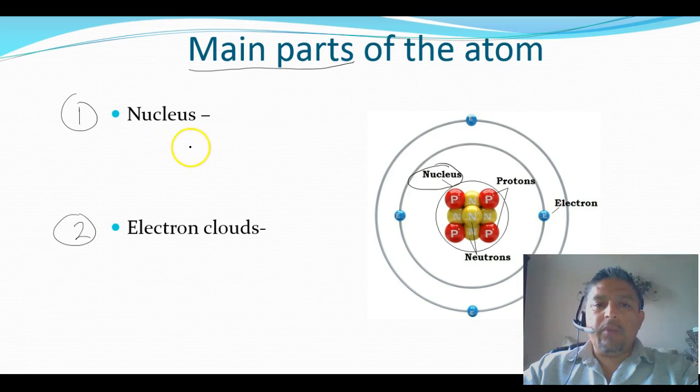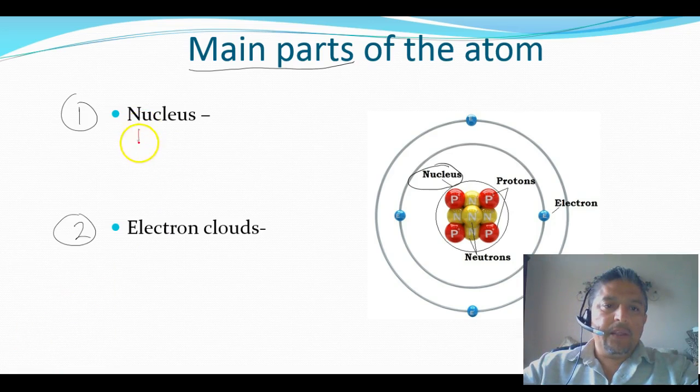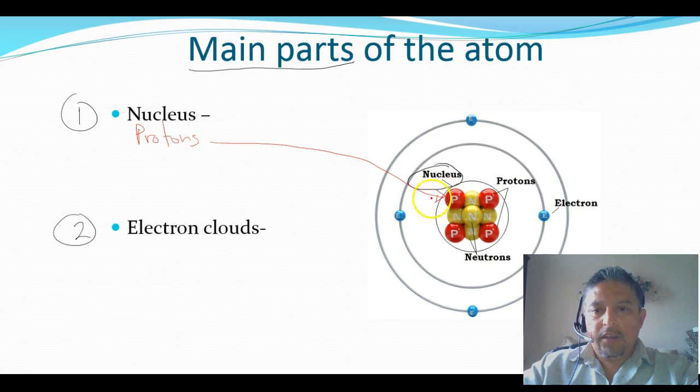In the nucleus we have two main particles. We have protons. We can see these ones are red in color. These are going to be the protons. I'm going to point one so you can see it. And these ones, they have a positive charge.